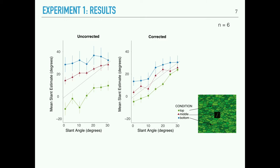In the corrected condition, many of these biases are mitigated — there's no significant difference between the y-intercepts of these lines from zero. However, in the uncorrected condition, these y-intercepts vary from zero significantly. There's also a change in the slope of the performance curves in the corrected versus uncorrected conditions, suggesting a change in sensitivity to changes in slant.